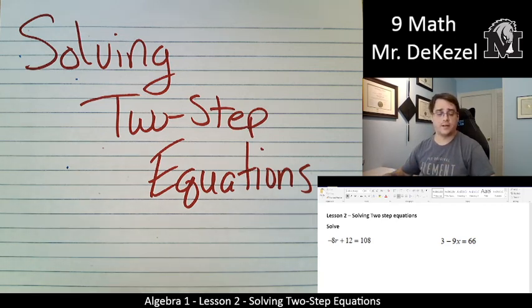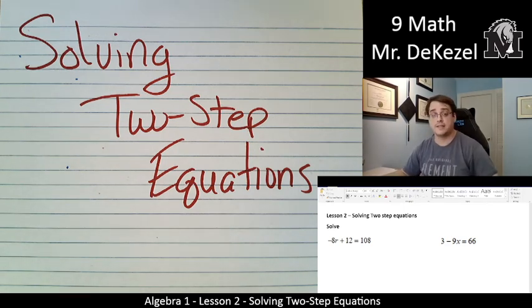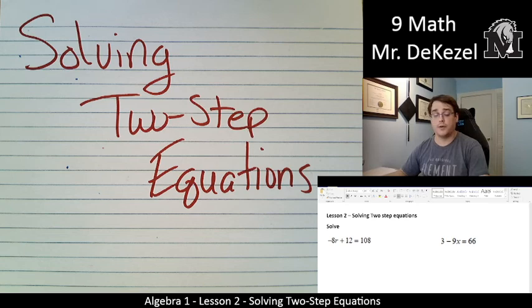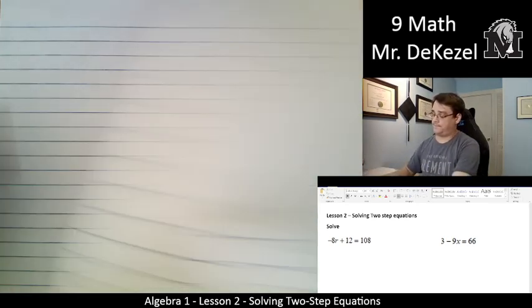We're going to be doing an addition or subtraction and a multiplication and division to solve for our variable this time. We are still just isolating, still just moving things across the equal sign. When it's positive on one side, it's negative on the other when we're adding and subtracting. If it's multiplied on one side, it's divided on the other and vice versa. So let's go. Let's do some examples.